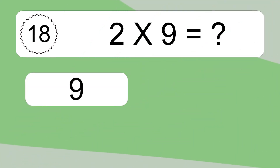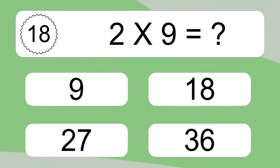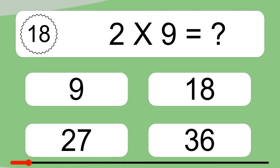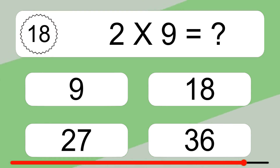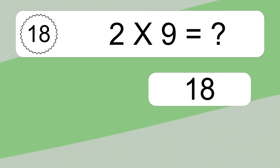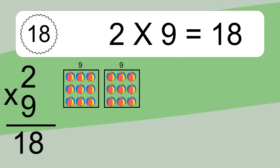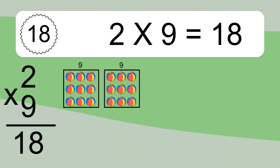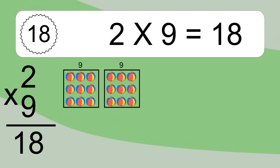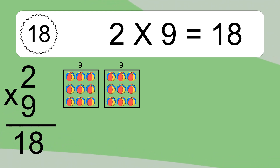2 times 9 equals what? 2 times 9 equals 18. We have two boxes and each box has nine colorful balls inside. If you count all the balls in all the boxes together, you will have two times nine balls. This equals 18 balls.